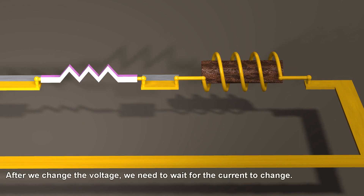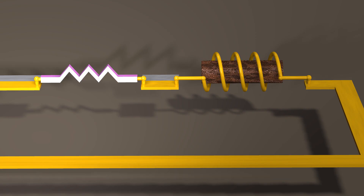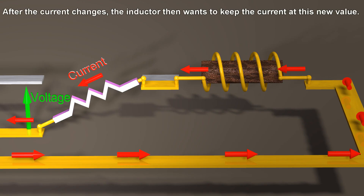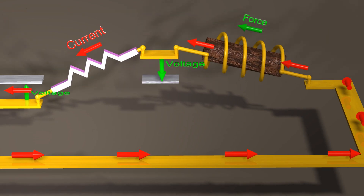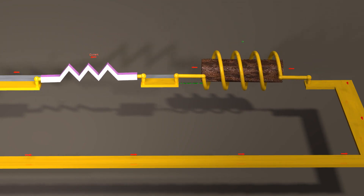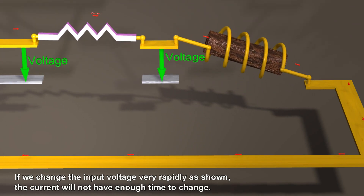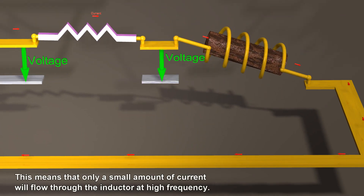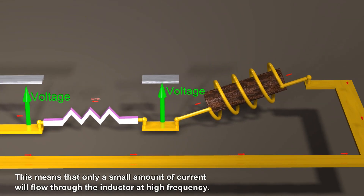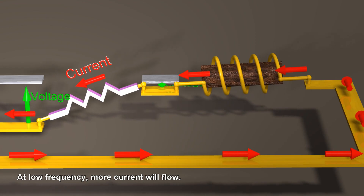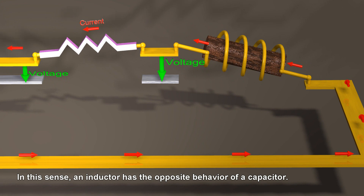After we change the voltage, we need to wait for the current to change. After the current changes, the inductor then wants to keep the current at this new value. If we change the input voltage very rapidly, the current will not have enough time to change. This means that only a small amount of current will flow through the inductor at high frequency. At low frequency, more current will flow. In this sense, an inductor has the opposite behavior of a capacitor.